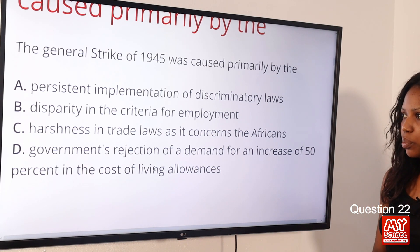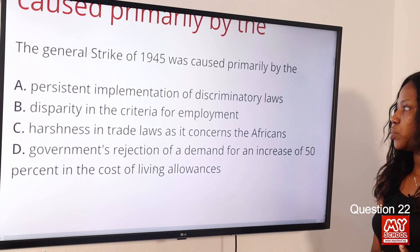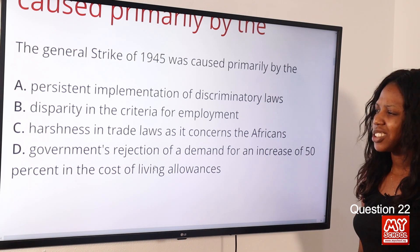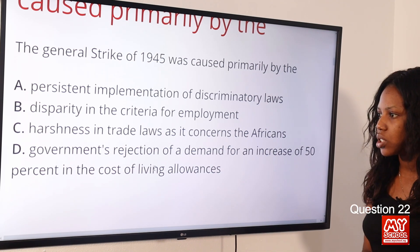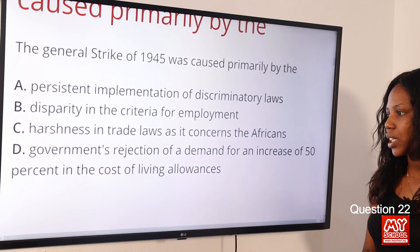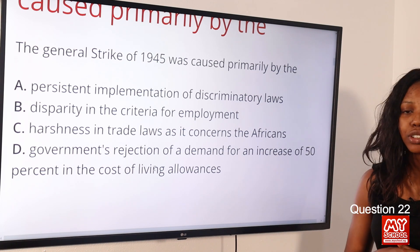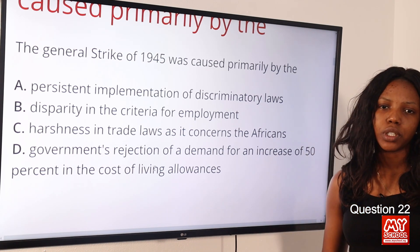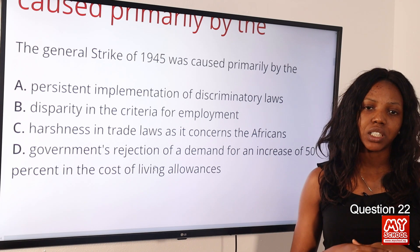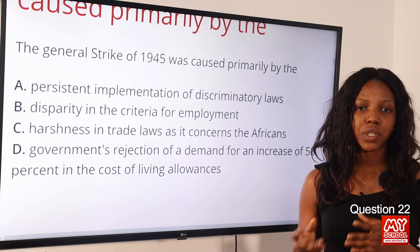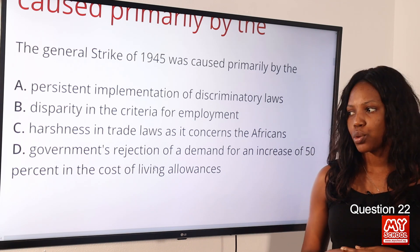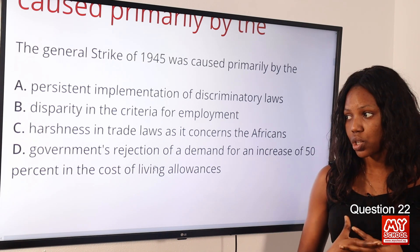Question 22: The general strike of 1945 was caused primarily by — option A: persistent implementation of discriminatory laws; option B: disparity in the criteria for employment; option C: harshness in trade laws as it concerns Africans; option D: the government's rejection of a demand for an increase of 50 percent in the cost of living allowances. The answer is option D. Africans demanded a 50% increase in wages; the British colonial government refused to grant it, which led to the strike.